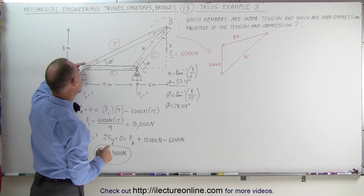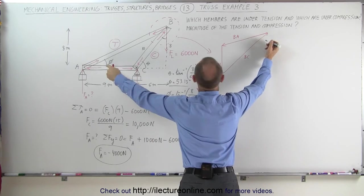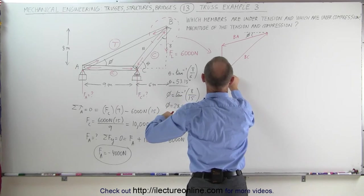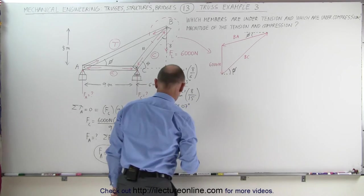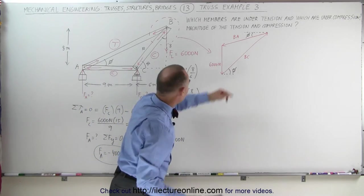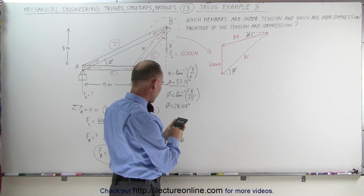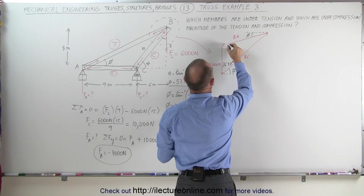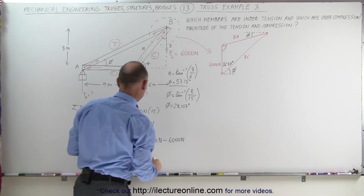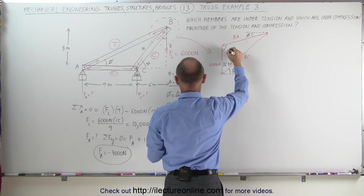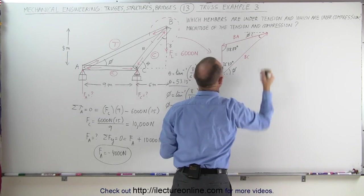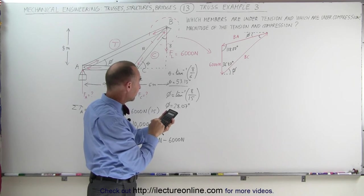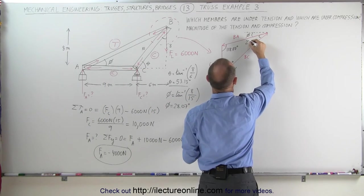BA is this side right here. Since this angle is phi, this angle here is phi as well. Looking at the other angle, that makes this angle theta. Since theta is 53.13 degrees, this internal angle is 90 minus 53.13, which gives 36.87 degrees. That means this angle here would be 90 plus phi, which is 28.07, giving us 118.07 degrees. The third angle is 180 minus 36.87 minus 118.07, which equals 25.06 degrees.